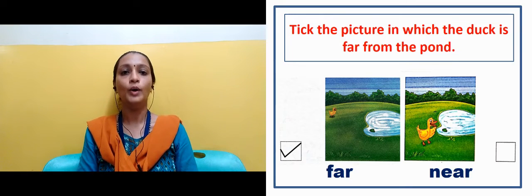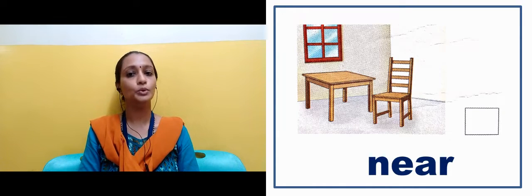Now in the next slide we can see that the chair is far from the table. Jho chair hai woh table se door hai. Now in the next slide we can see that the chair is near to the table.